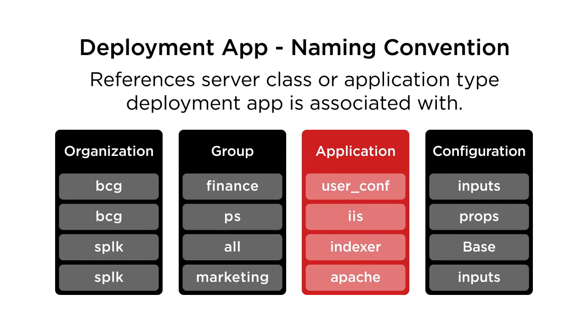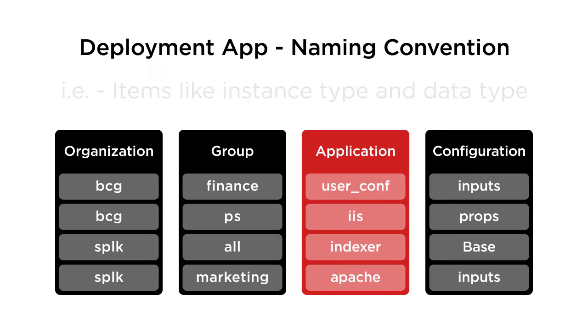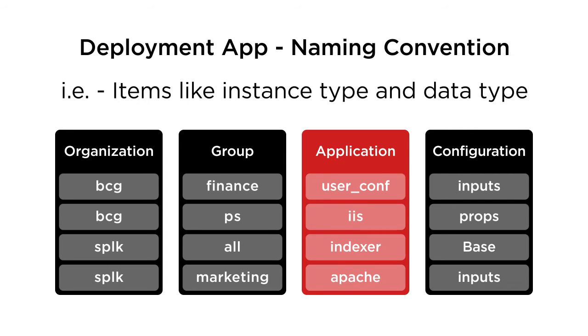The Application key references the server class or application type that the deployment app is associated with. Items such as instance type or data type will fall into this category.